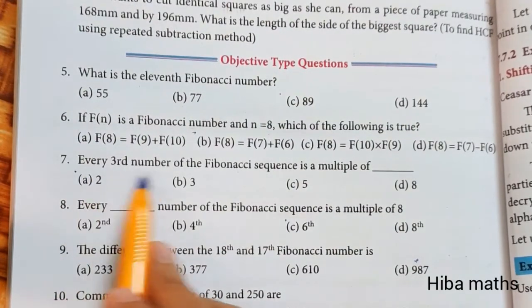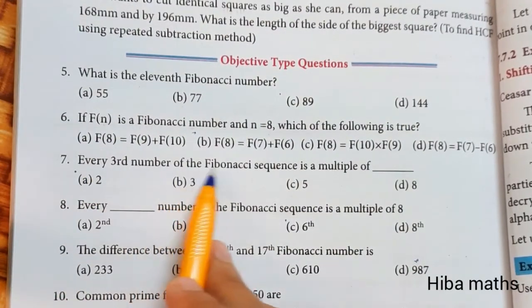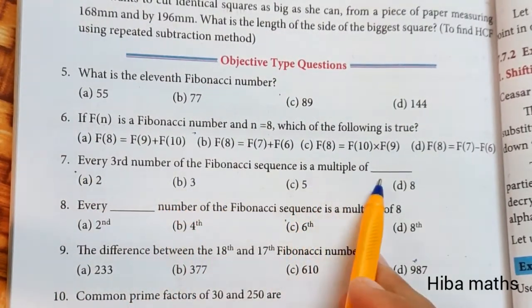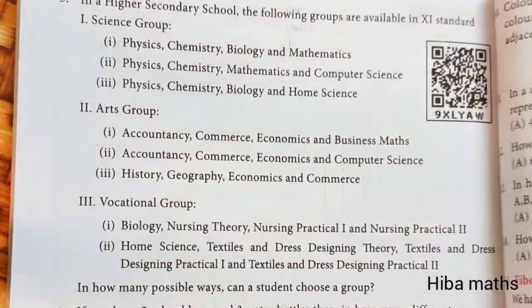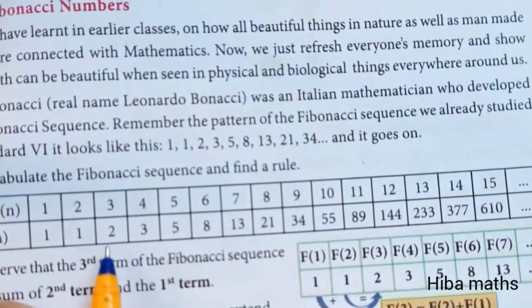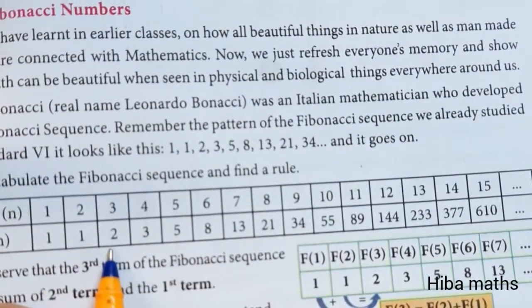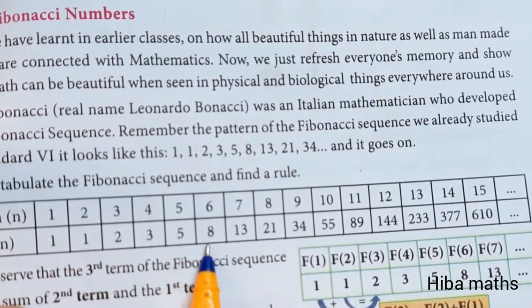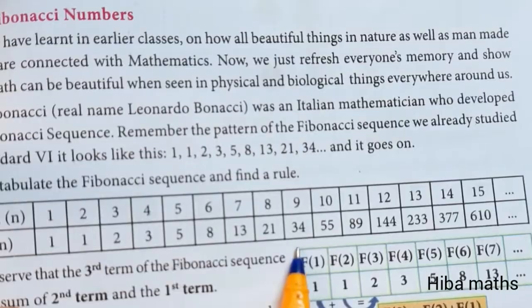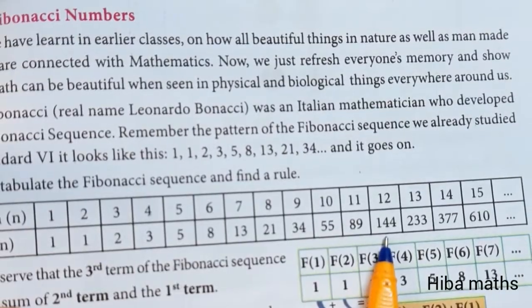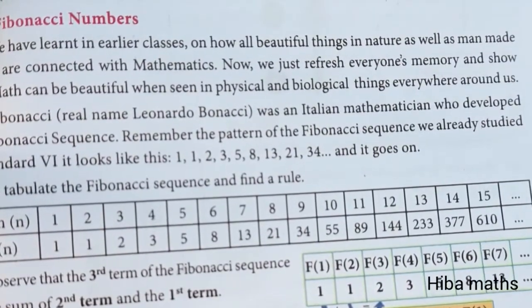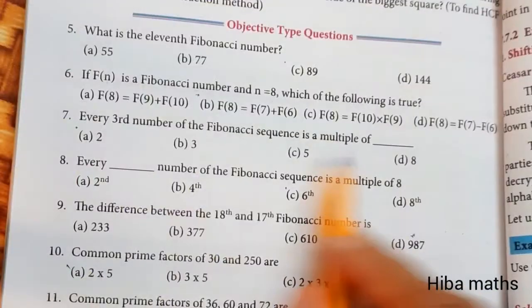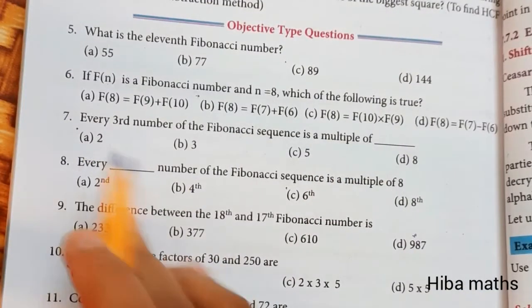Every third number of the Fibonacci sequence is a multiple of 2. If we look at the series: the third number is 2, the sixth number is 8, the ninth number is 34, and the twelfth number is 144. All of these are multiples of 2.